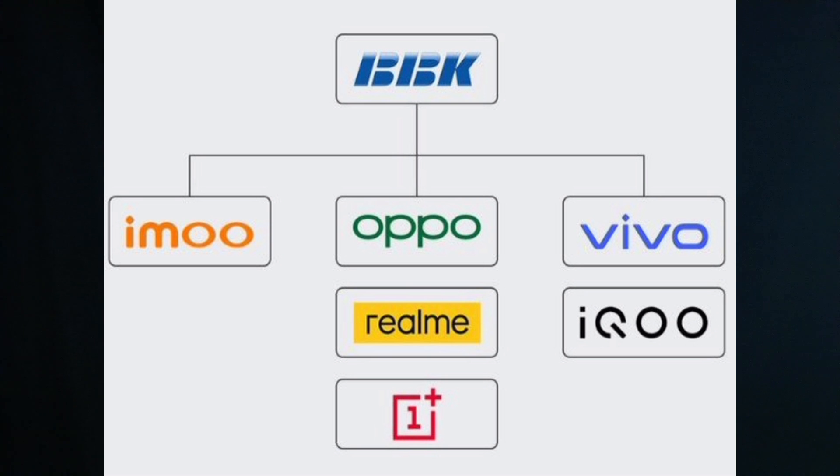You can choose BKK mobiles. You can choose Vivo, Oppo, Realme, iQOO, and OnePlus. You can choose OnePlus 11R. You can choose this option — you can choose mobile by default.